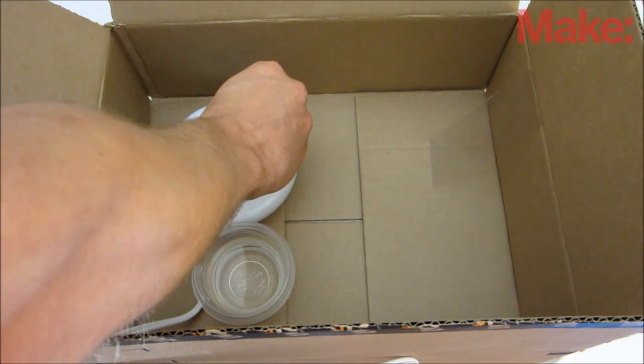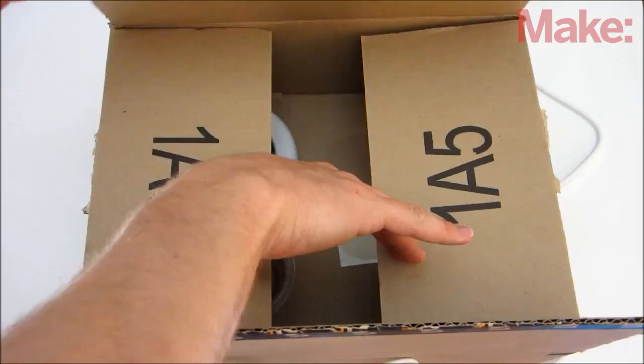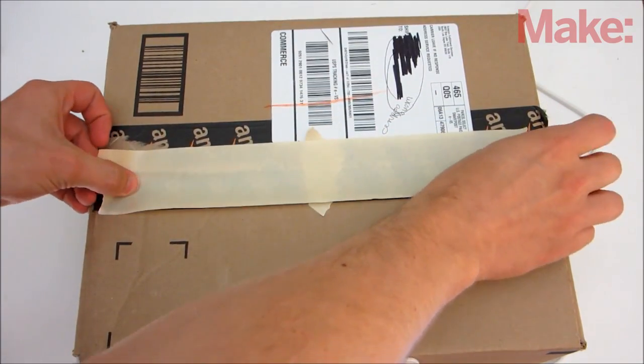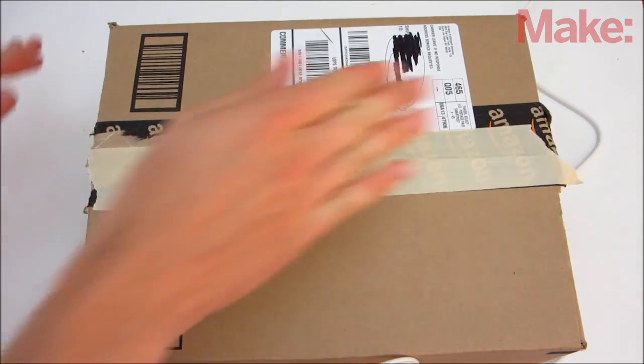Once everything is in place, put a large drop of superglue onto the tray, turn on the heater, and close up the container. Because superglue fumes are toxic, you want to place the container in a well-ventilated area.